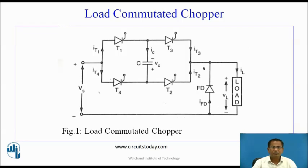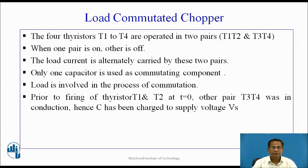This is the circuit diagram of load commutated chopper. The four thyristors T1 to T4 are operated in two pairs: T1, T2 and T3, T4. When one pair is on, the other is off. The load current is alternately carried by these two pairs. Only one capacitor is used as a commutating component. The load is involved in the process of commutation.